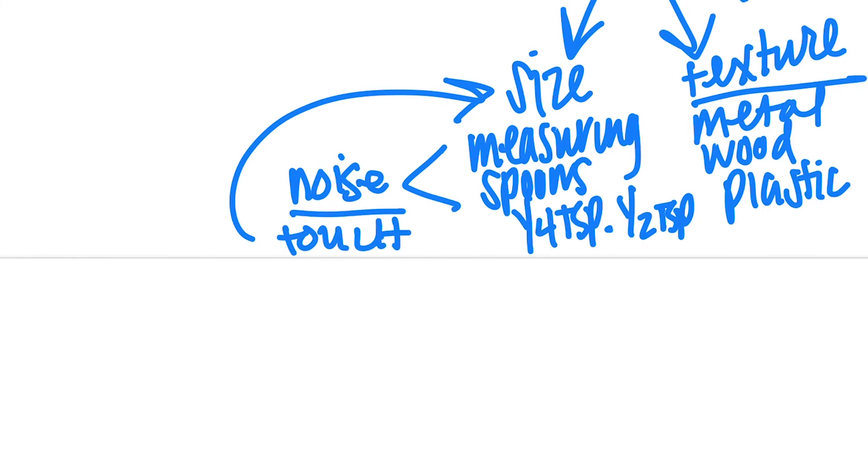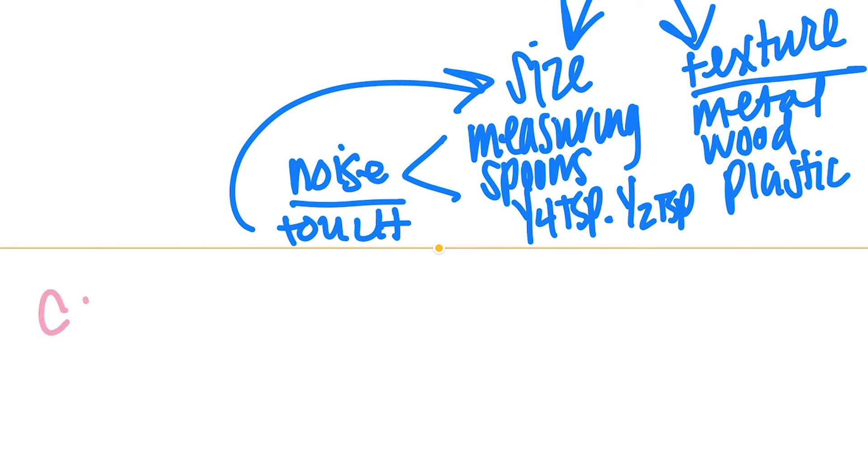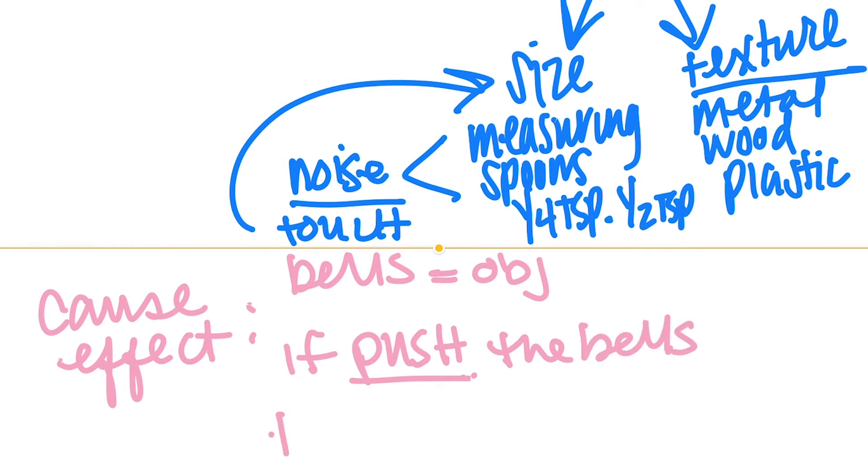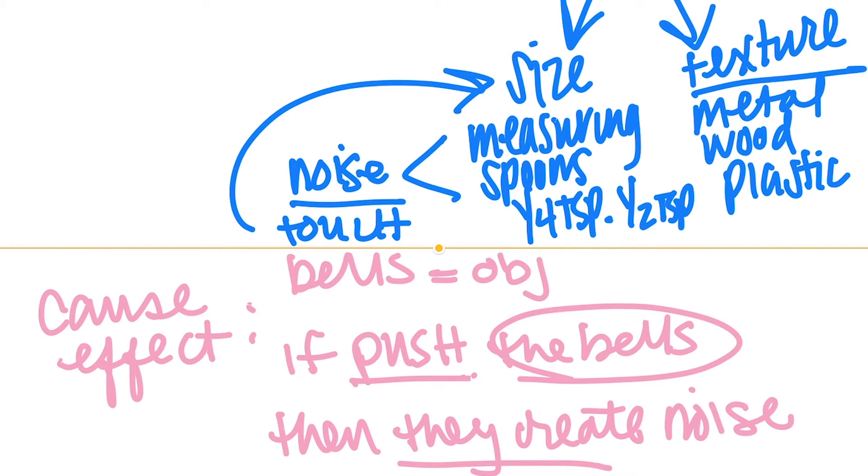Another aspect that the little room demonstrates is the concept of cause and effect. So essentially say you have little bells. So this is that. Bells equals the object. The sensory aspect of cause and effect is if I push the bells, then they create noise. So for a kiddo trying to understand that what I do can affect the world around me, you have the object, which is the bells, and then you have the cause and effect. Push equals noise.